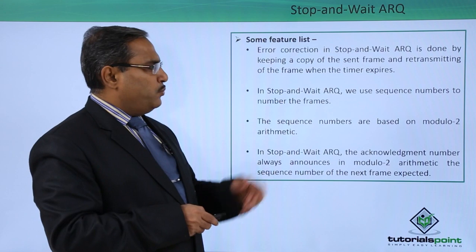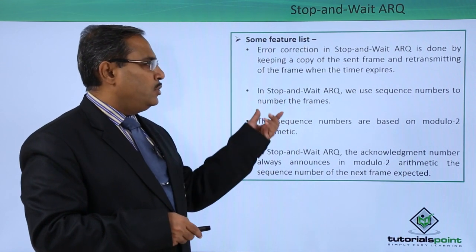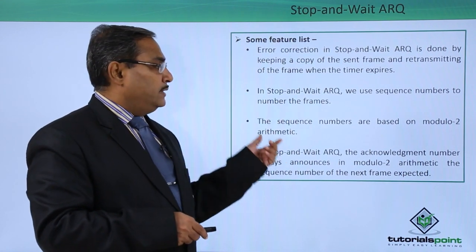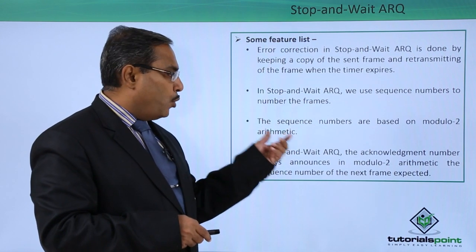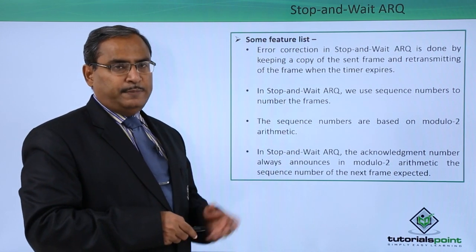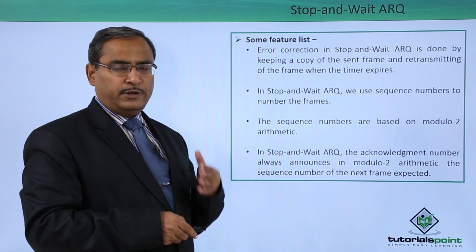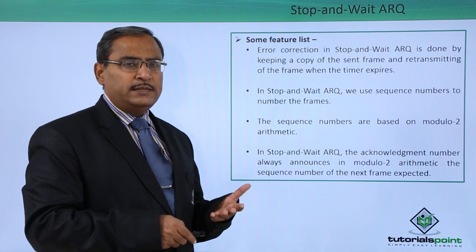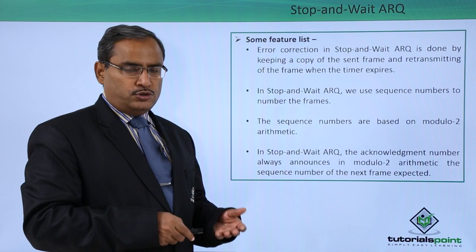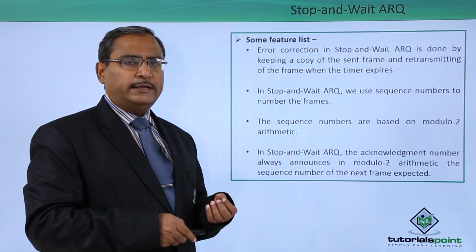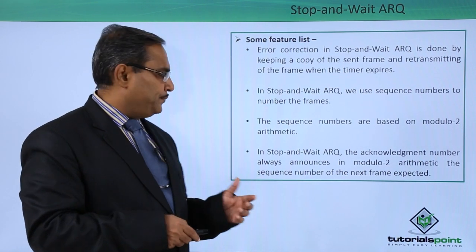In Stop and Wait ARQ, we use sequence numbers to number the frames. The sequence numbers are based on modulo-2 arithmetic. That means the sequence number cannot be more than 0 and 1, because modulo-2 means the remainder of division by 2 — so the range of values is 0 and 1 only.